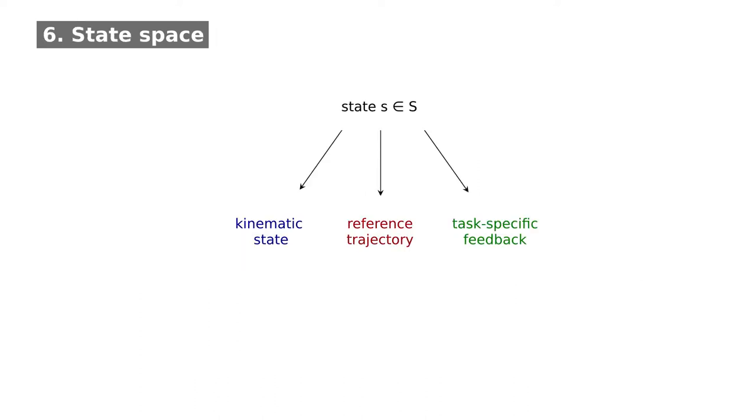To this end, the problem is formalized as a Markov decision process, which is composed of a state space, an action space, and a reward function. The state contains information on the kinematic state and the reference trajectory, as well as feedback from the current task execution.